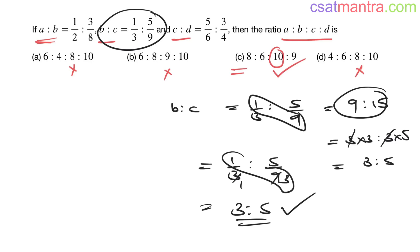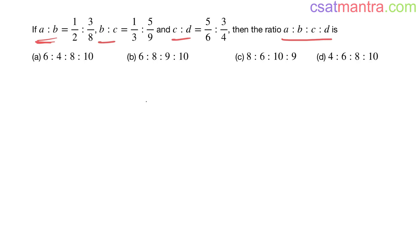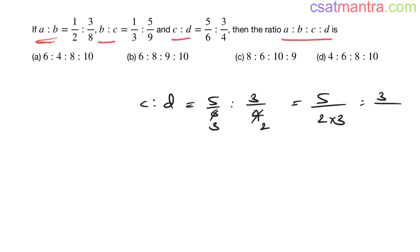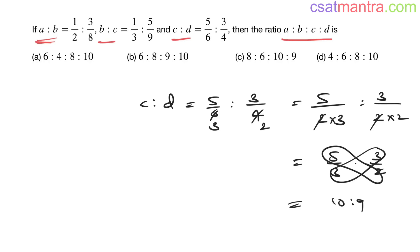If you scale up 3:5 by 2, it becomes 6:10. So where you have 6:10, only answer C qualifies. For the third ratio, c:d = 5/6 : 3/4. Writing 6 as 2×3 and 4 as 2×2, the 2s cancel, giving 5/3 : 3/2, which is 10:9.